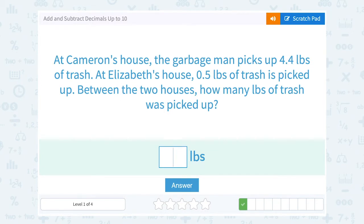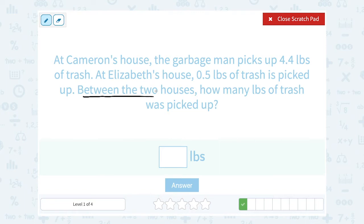At Cameron's house, the garbage man picks up 4.4 pounds of trash. At Elizabeth's house, 0.5 pounds of trash is picked up. Between the two houses, how many trash was picked up? Well we want to know between the two, meaning a total of the two houses. So again, we're going to add those two numbers together.